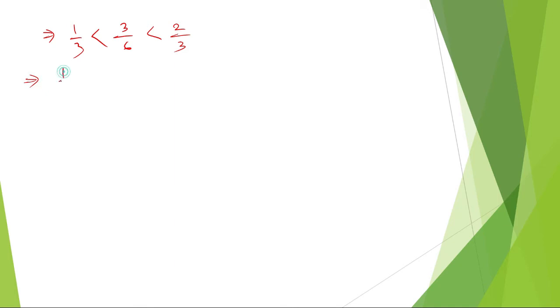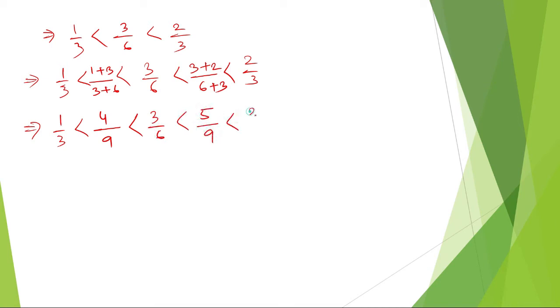Again, like the previous questions, 1/3, put the gap, write down 3/6, put the gap, write down 2/3. So here, (1+3)/(3+6). And here, (3+2)/(6+3). Numerator plus numerator, denominator plus denominator. So 1/3 less than 4/9 less than 3/6 less than 5/9 less than 2/3.